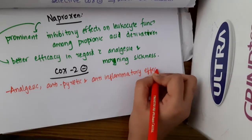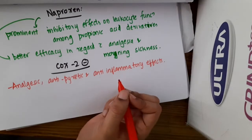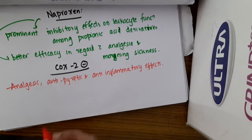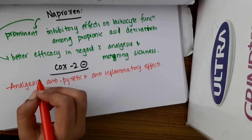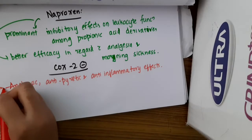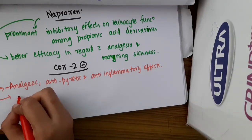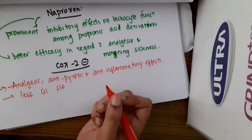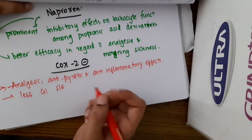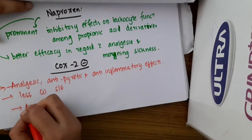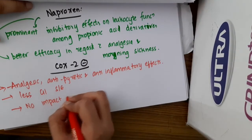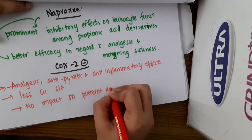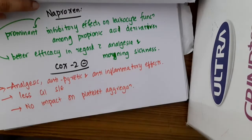These effects are similar to those of non-selective NSAIDs, but COX-2 inhibitors have less gastrointestinal side effects when compared to non-selective NSAIDs. They also have no impact on platelet aggregation.